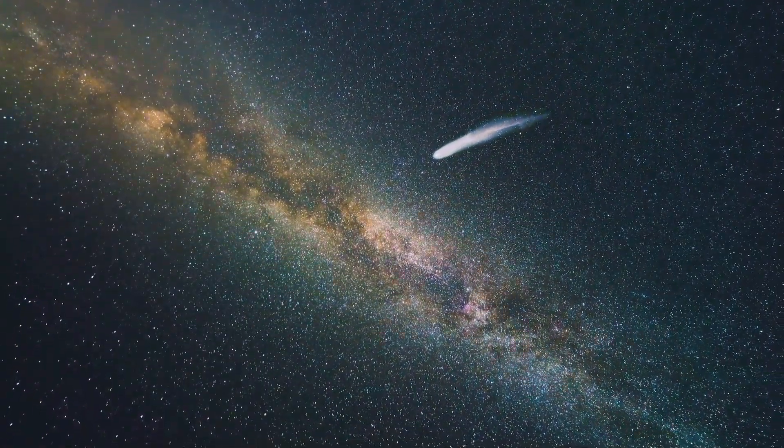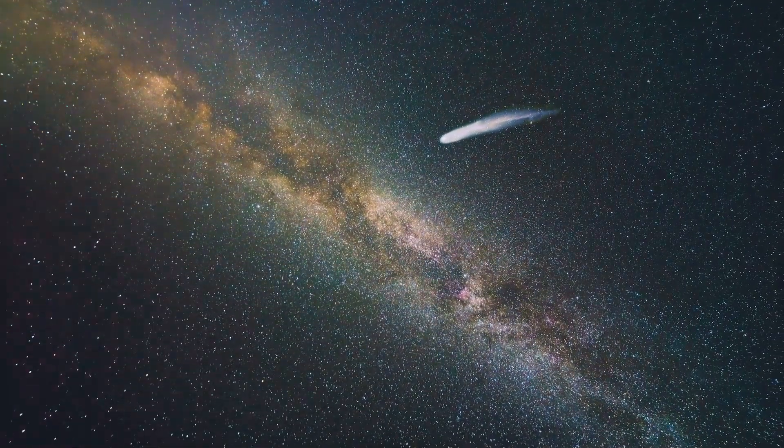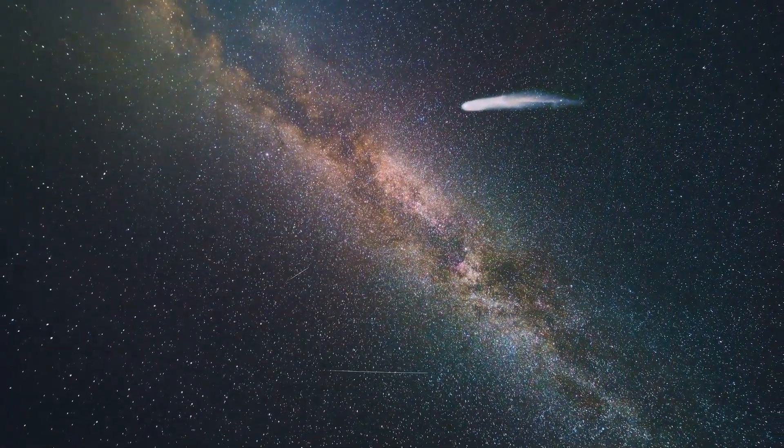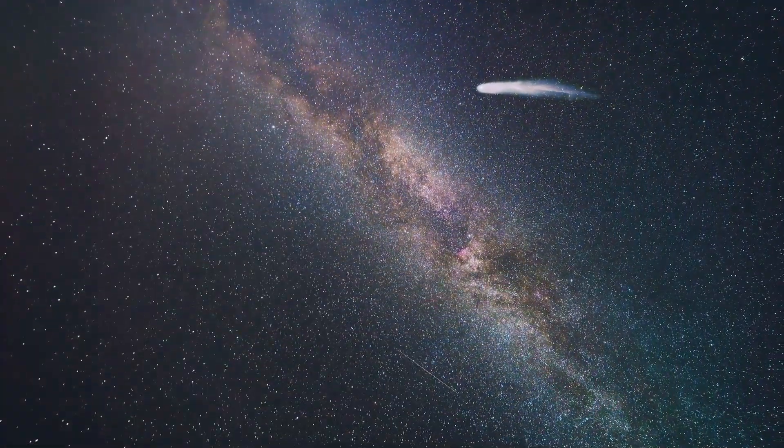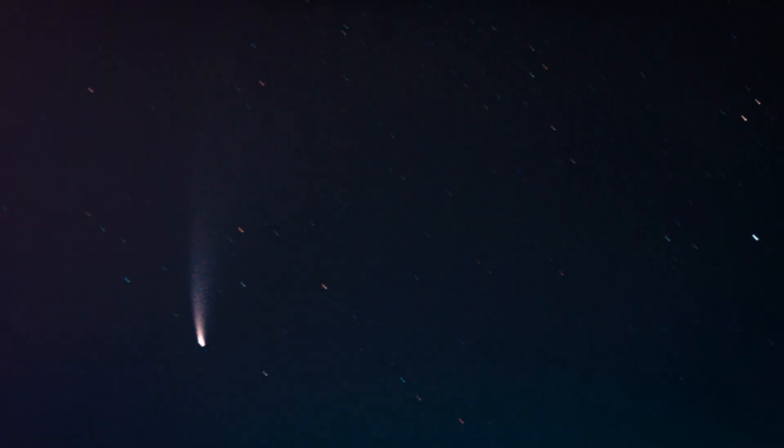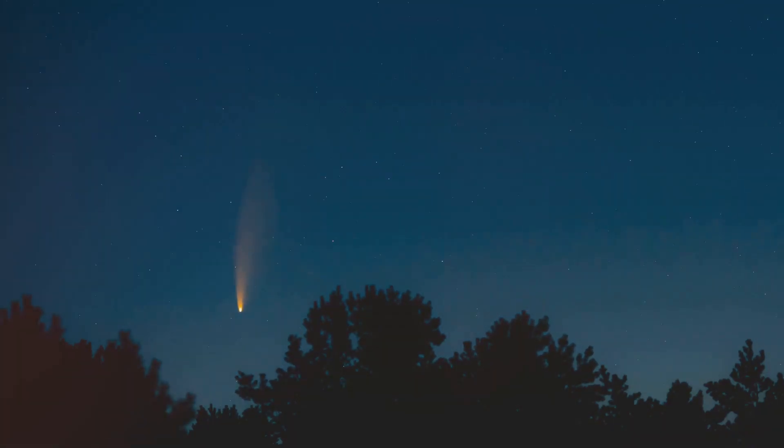The sun's radiation pressure and solar wind then push this material outward, creating the comet's distinctive tail. This tail is composed of gas and dust particles that have been released from the comet's nucleus. The tail always points away from the sun, regardless of the comet's direction of motion. This is due to the constant pressure exerted by the solar wind, which shapes the tail and directs it away from the sun.